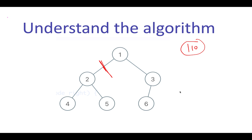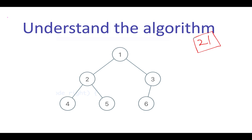Now let's talk about how to actually build the algorithm. The maximum possible product is 110. The first thing I'm going to do is calculate the total sum of the complete tree: 6+3=9, 9+1=10, 10+2=12, 12+5=17, 17+4=21. The total sum is 21. Next, I will try to calculate the sum of each subtree.